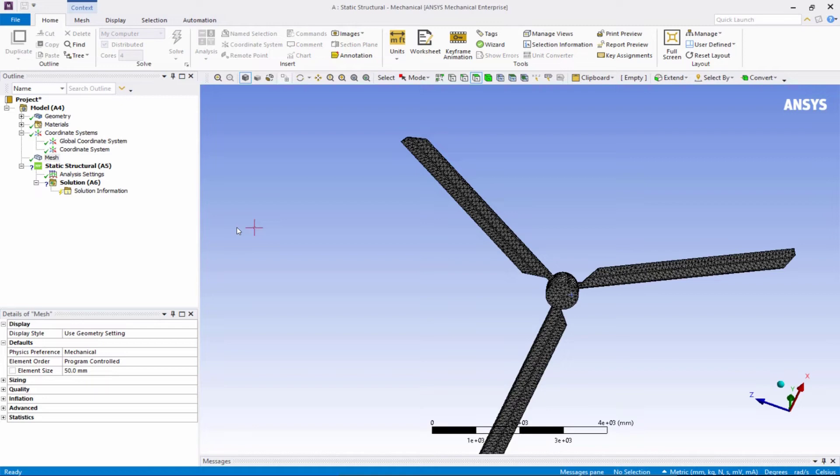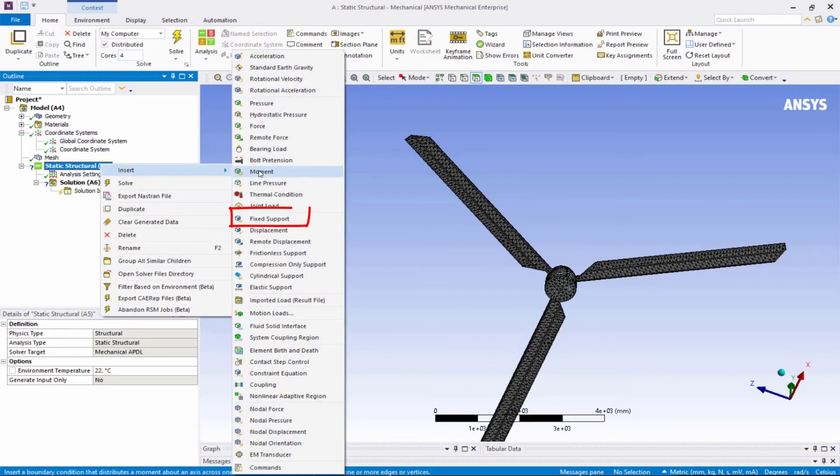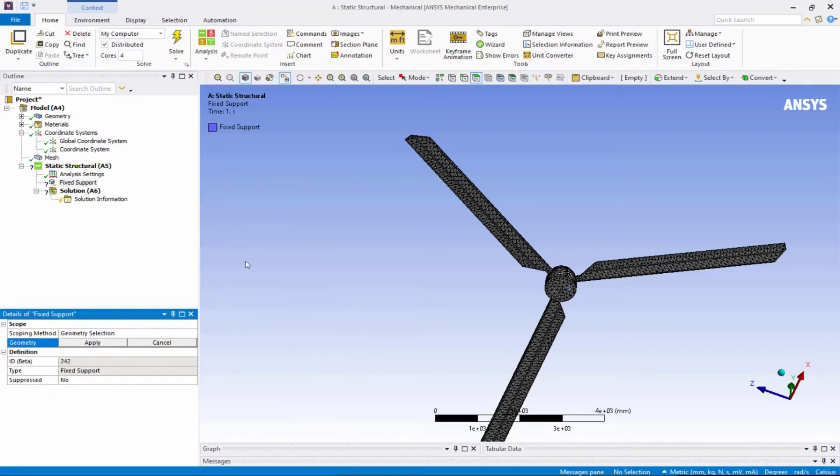Now we will set up the model with boundary conditions and inertial load. First, right-click on Static Structural, insert a fixed support. Pick the face selection filter and select the end surface of the blade. Click Apply for the geometry scoping to define the fixed support.